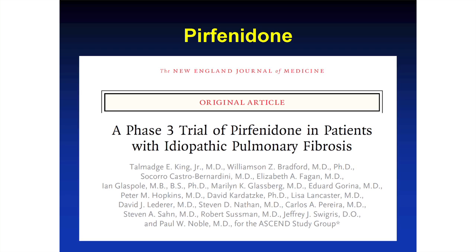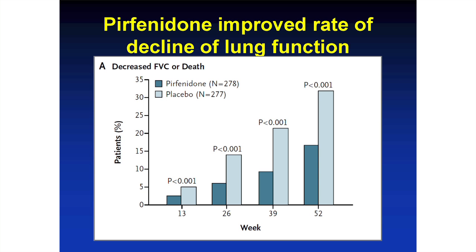This is a study in idiopathic pulmonary fibrosis — not in scleroderma-associated interstitial lung disease — of a drug called pirfenidone, which is an anti-fibrotic drug. This was a placebo-controlled trial where half the patients got the drug and half got the placebo. They looked at how patients who got the placebo did compared to those who got the drug with respect to walk distance, breathing tests, and survival.